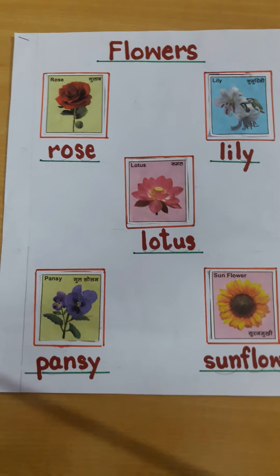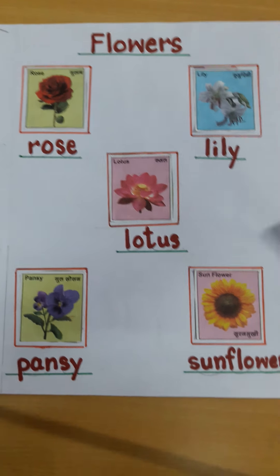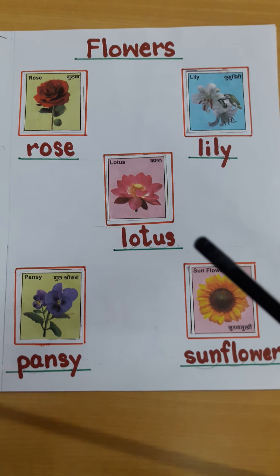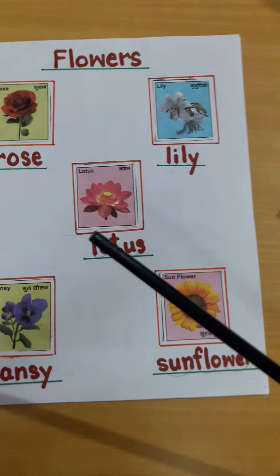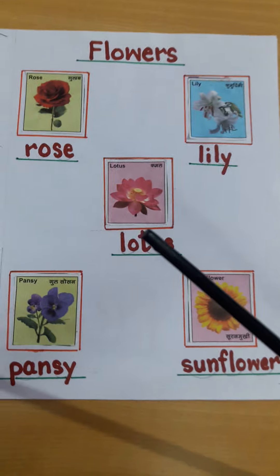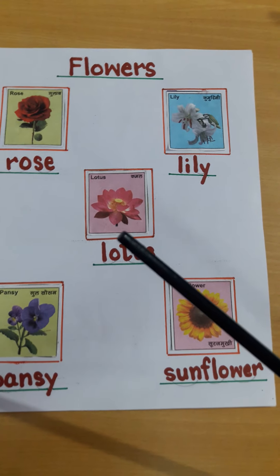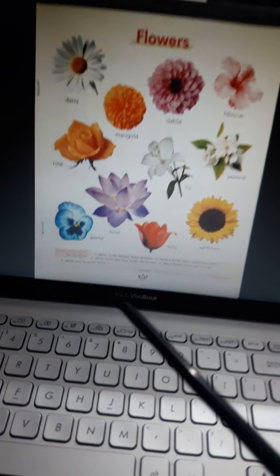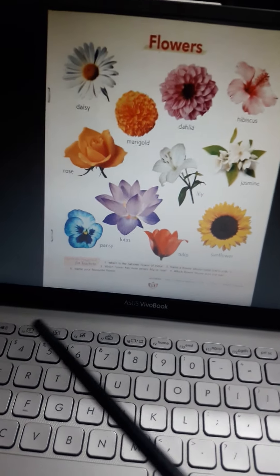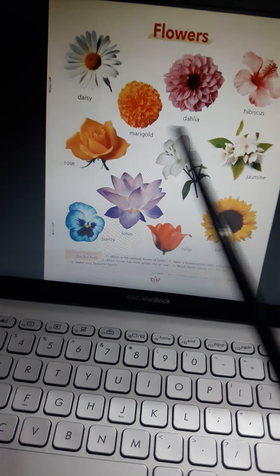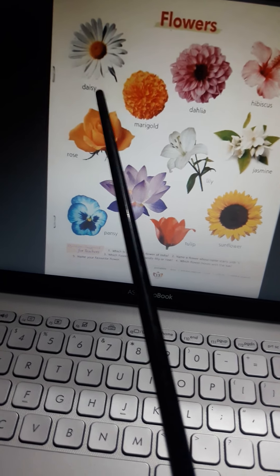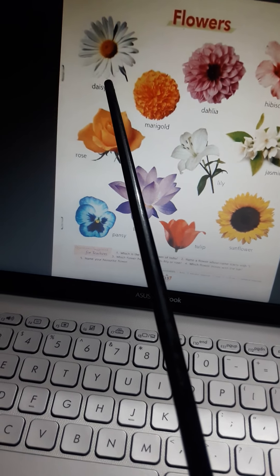Aur dekhne me bhi bahut acha lagte hai. To sabse pahle aaj hum log ke book mein jo bhi flowers hai, us flowers ko hum log aaj ek baar padh lenge. Us mein toh dheer saare flowers hote hai. So first we learn. Now, first flower kya hai?